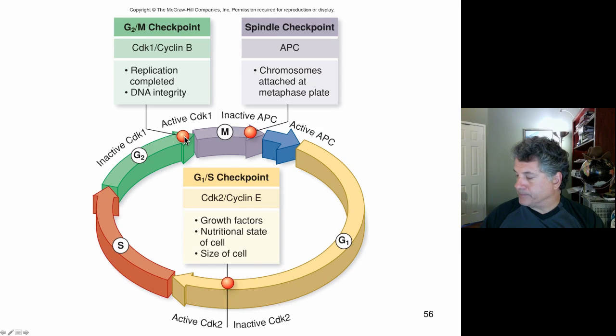And then finally we've covered the spindle checkpoint at the anaphase transition in which the cell is asking itself is everything set up for appropriate segregation of the sister chromatids. And that ends our treatment of the cell cycle and mitosis and next we'll move on to meiosis.